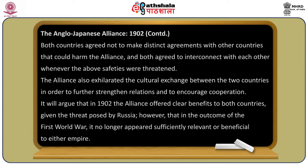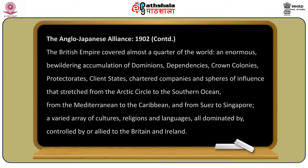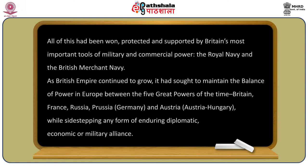The British Empire covered almost a quarter of the world — an enormous accumulation of dominions, dependencies, crown colonies, protectorates, client states, chartered companies, and spheres of influence stretching from the Arctic Circle to the Southern Ocean, from the Mediterranean to the Caribbean, and from Suez to Singapore. This had been won, protected, and supported by Britain's most important tools of military and commercial power: the Royal Navy and the British merchant navy.